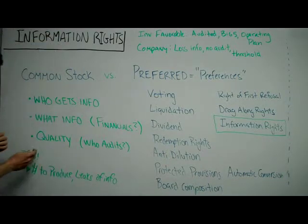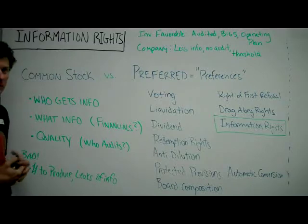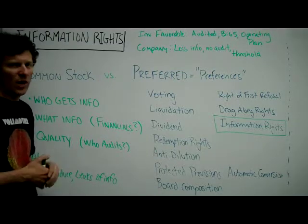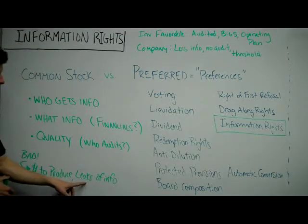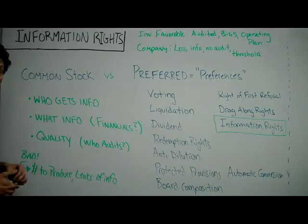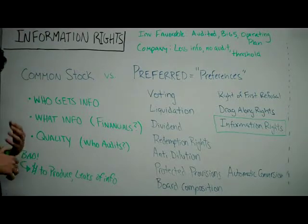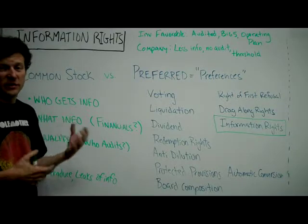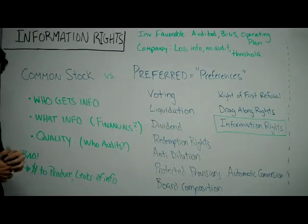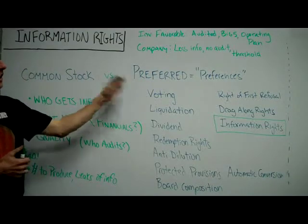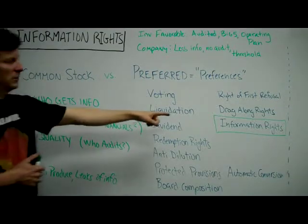There are some bad things that can happen with information rights. The two easiest to explain are: first, it's expensive to produce this information — it's a real drag on the company to spend money getting audited financial statements from a Big Five firm. Second, thresholds are sometimes put in because companies are concerned about small investors leaking financials around valuation, funding specifics, technology, or IP. So it's important to understand these preferred stock preferences that common stock does not have — one of those preferences is the right to information.